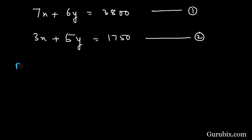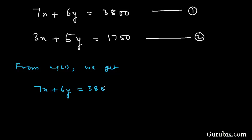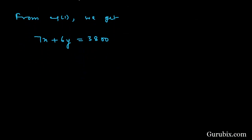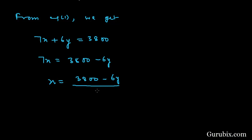Now we shall use the substitution method to solve this pair of linear equations. Starting from equation number one: seven X plus six Y equals 3800. We write X in terms of Y, so seven X equals 3800 minus six Y, which means X equals (3800 minus six Y) over seven.